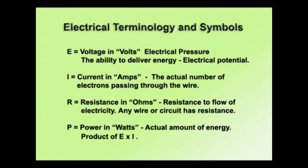I is current, and it's rated in amps – like a 10-amp toaster or a 10-amp hair blower or 10-amp battery charger. It's the actual number of electrons passing through the wire, like how much water comes out of a tube. R is resistance, and it's rated in ohms. It is simply the resistance to the flow of electricity.